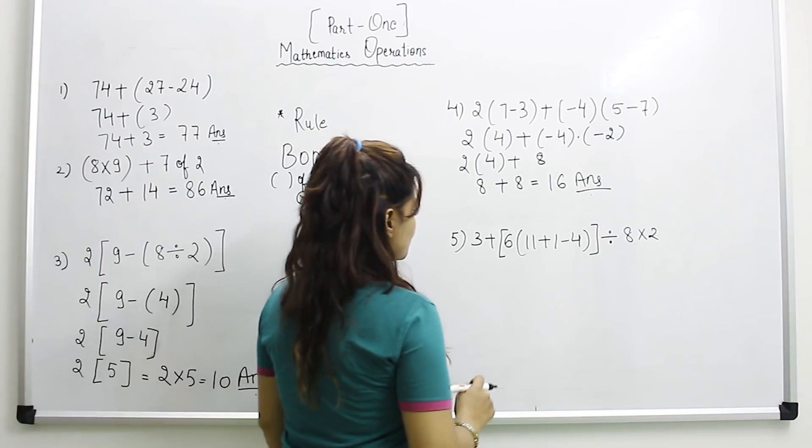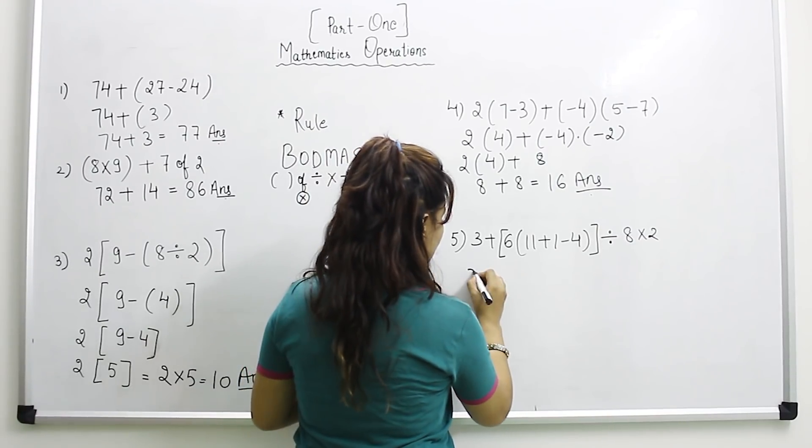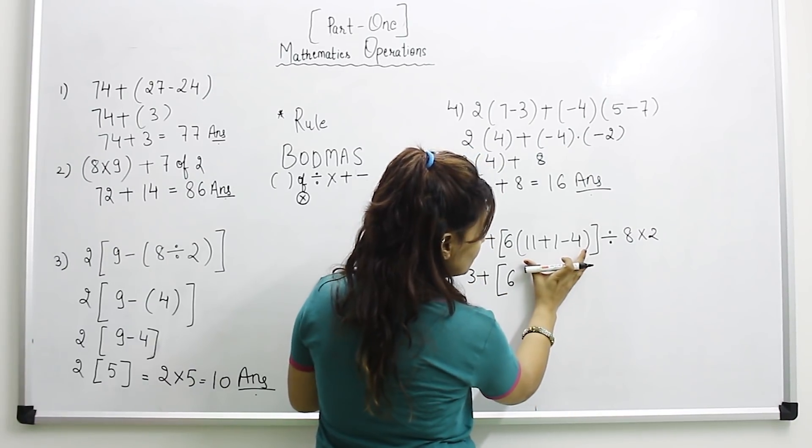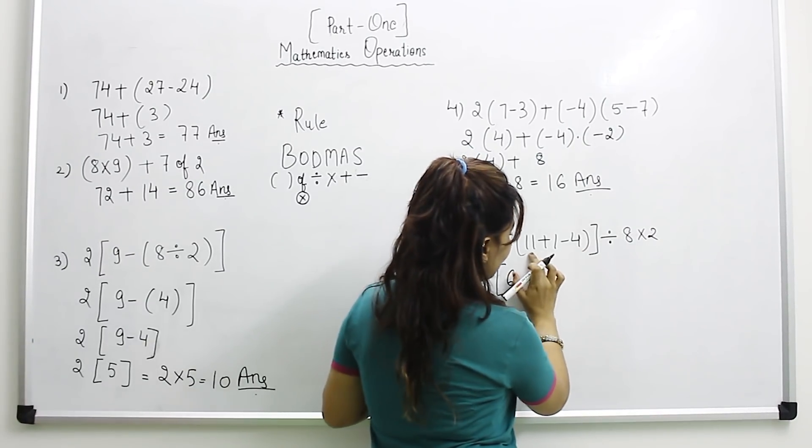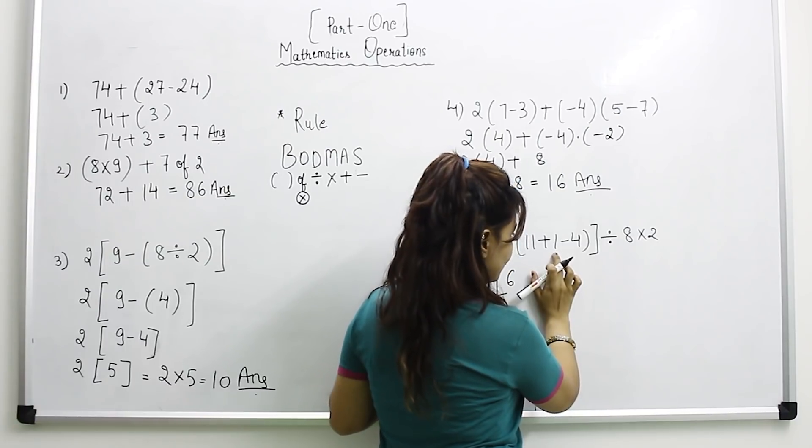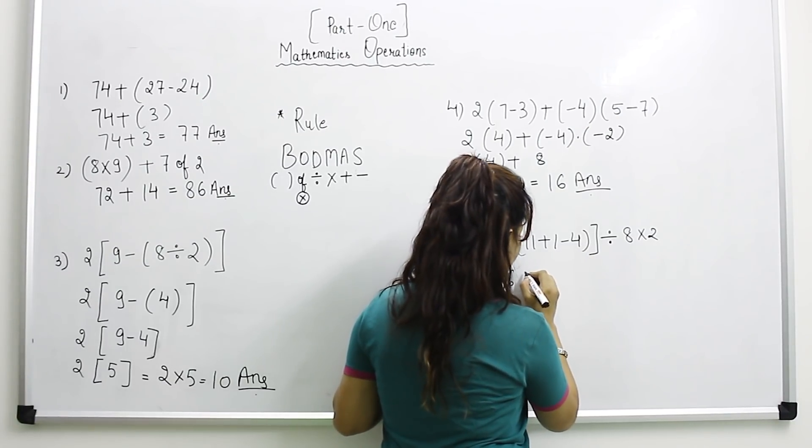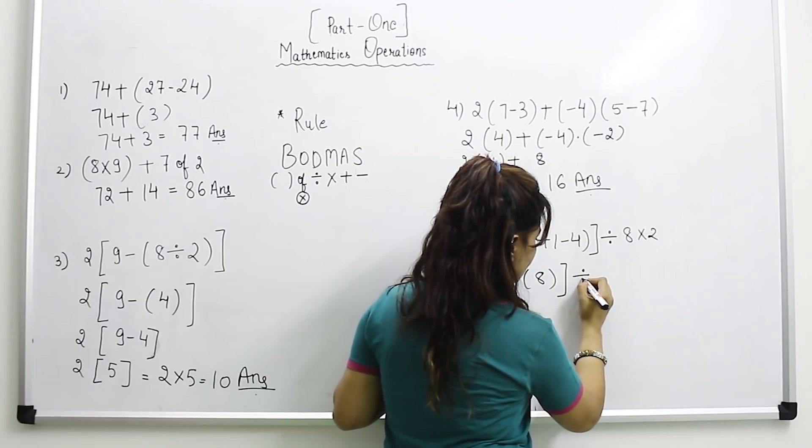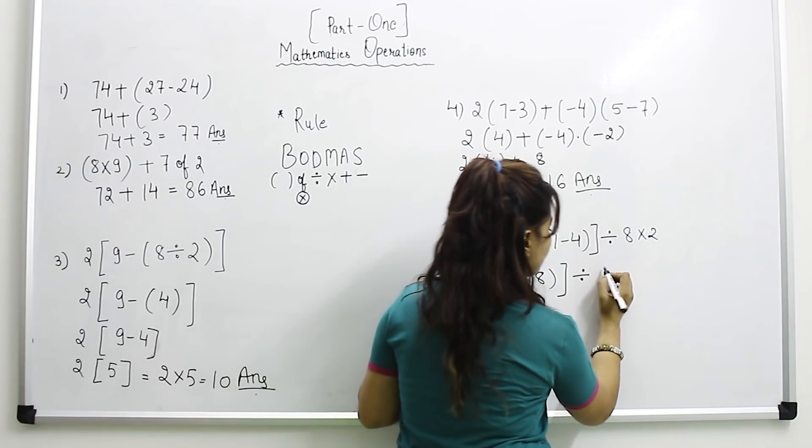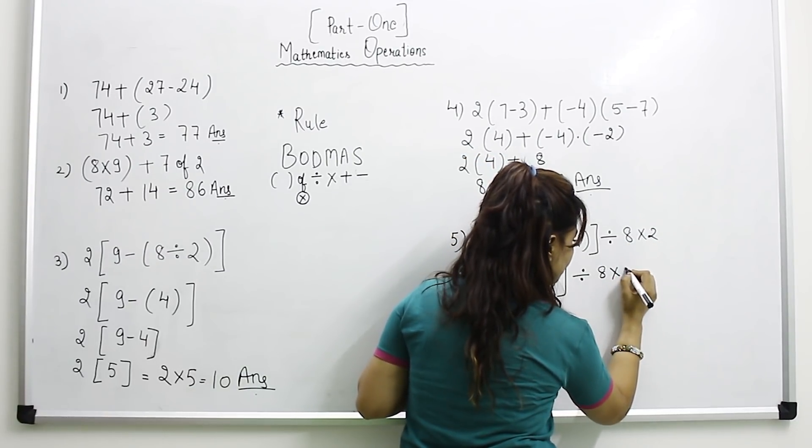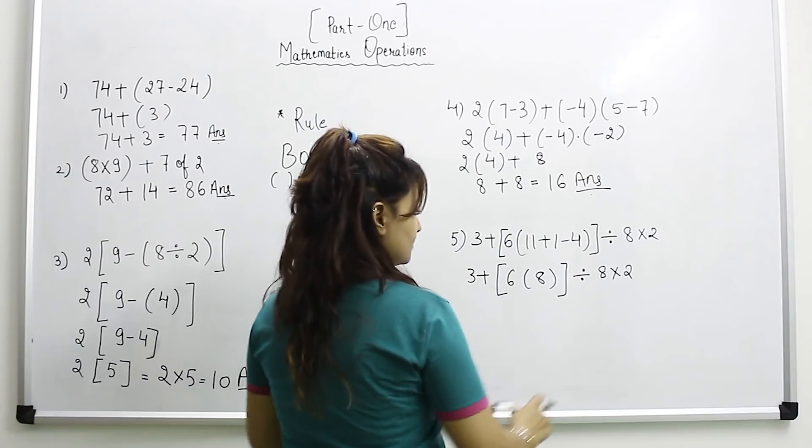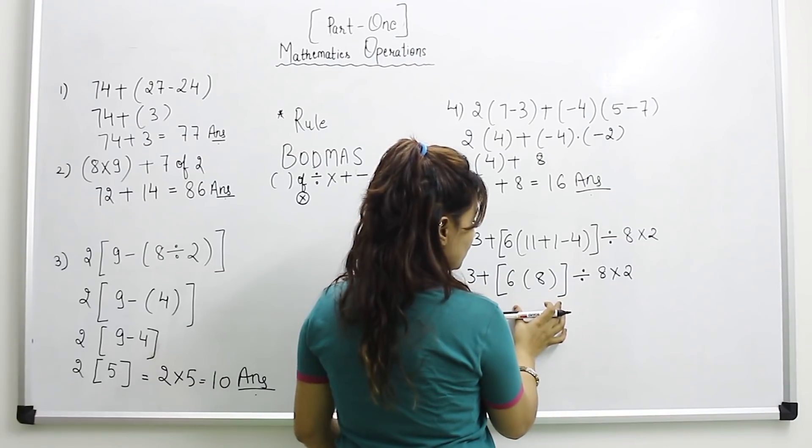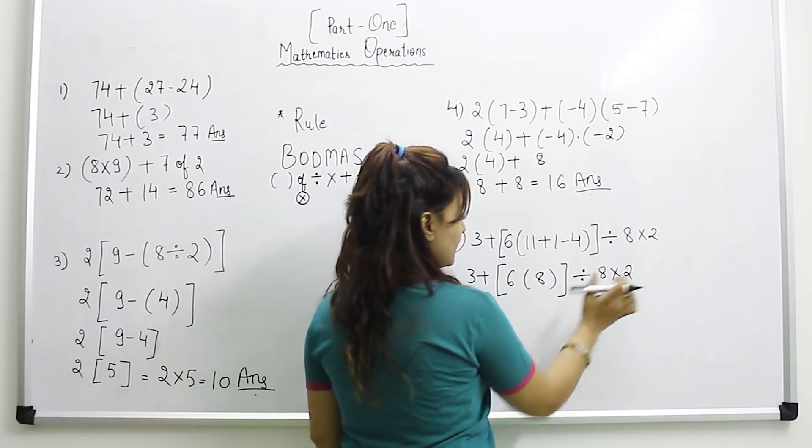Now last question: 3 plus bracket. We will solve this bracket first: 11 plus 1 equals 12. 12 minus 4 equals 8, bracket close, 8 into 2. We will keep it the same because we have to solve this bracket first before solving multiplication, as per the rule.